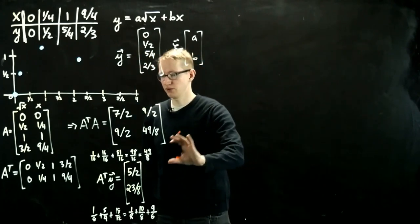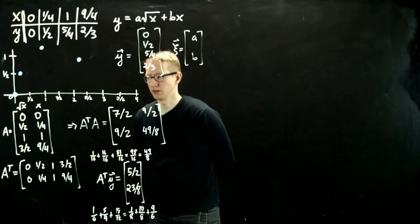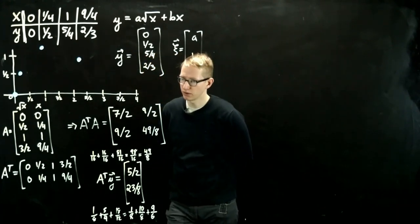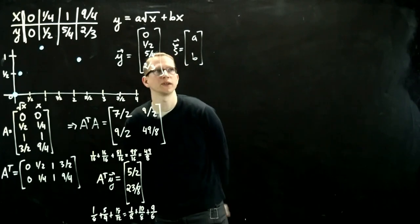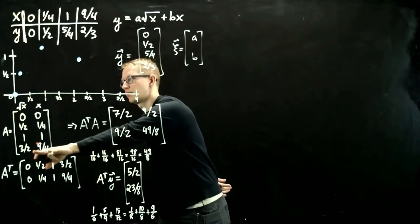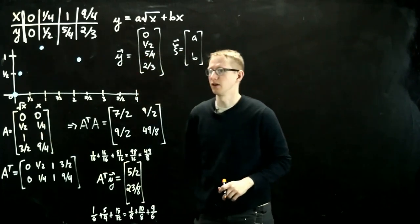So now we have our matrix. We have this matrix Y. We can try to solve this system. And let's compute the inverse of A transpose A. By the way, in this case, these vectors are linearly independent. So we know that this has an inverse.